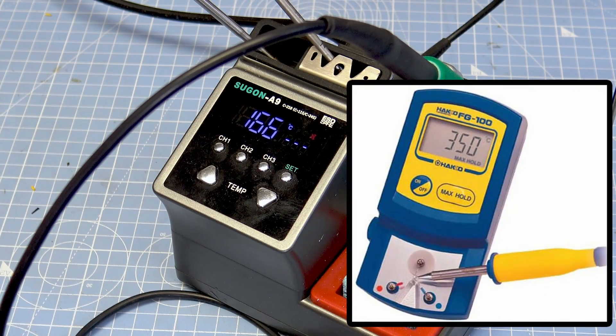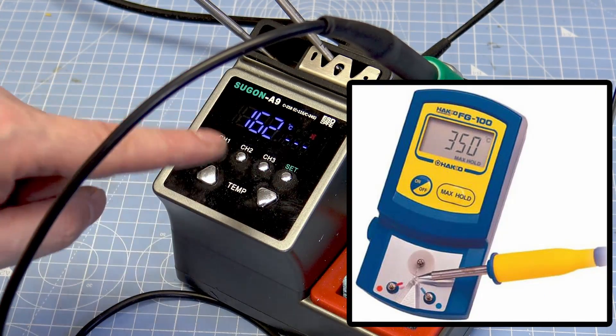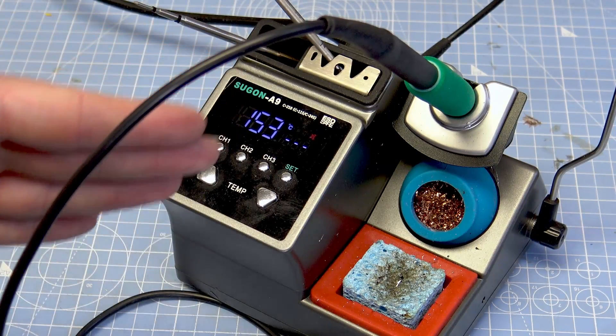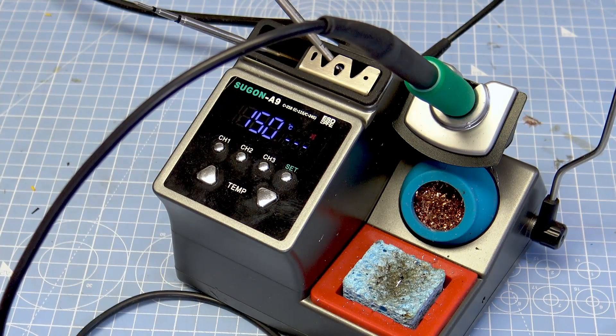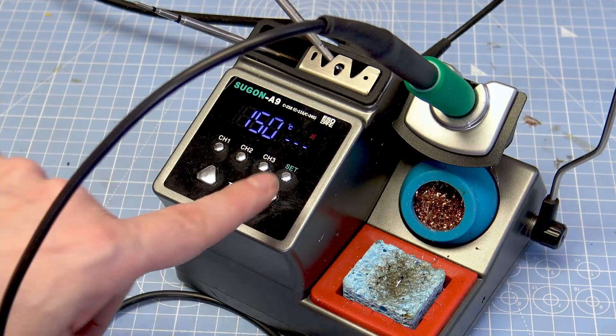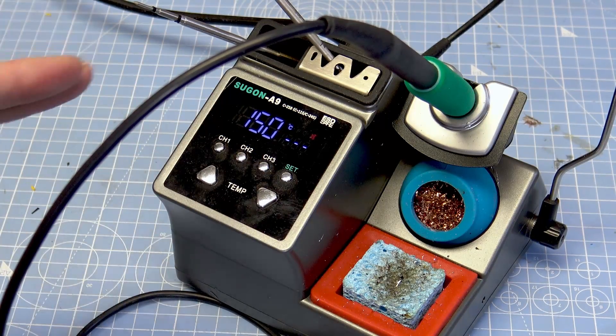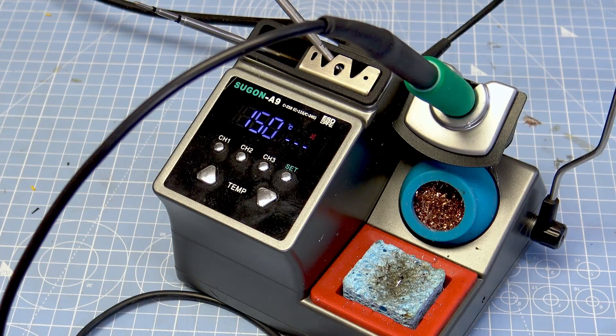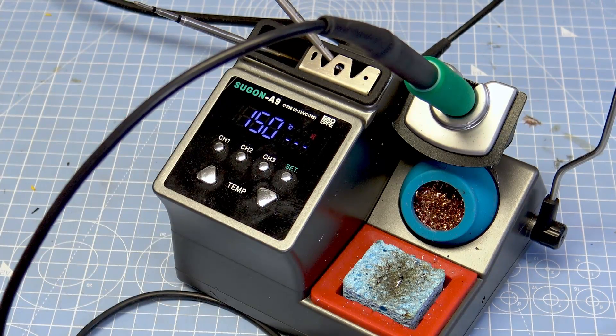There is an option for calibration. We need a tip calibrator to do that. What the calibration does is allows you to set an offset. So it thinks that this is at 300, when you actually measure it, it could be at 280. So you can change the offset for each one to bring it down to what the actual temperature of the tip is rather than what this thinks it is. You are supposed to do that every time you change your tip as well.